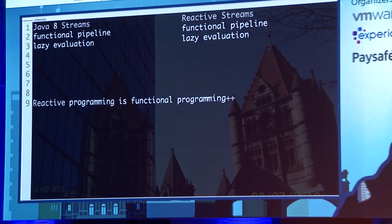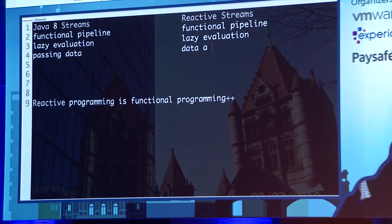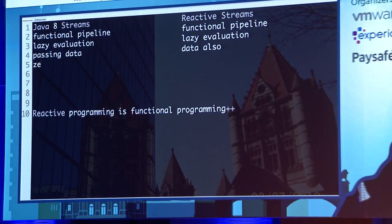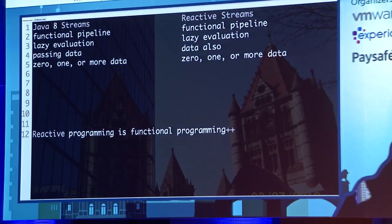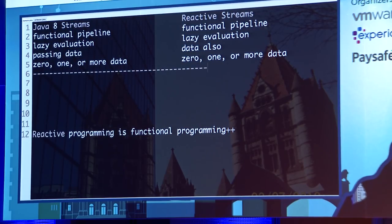It's not a disjoint idea. Reactive programming is actually functional programming taken to the next level — functional programming plus-plus. In the case of streams, you are passing data. In the case of a reactive stream, you also pass data. In both, you put zero, one, or more data. But unfortunately, the commonality ends right about there, and then reactive programming takes up from here.